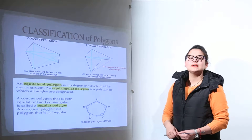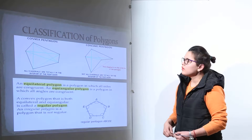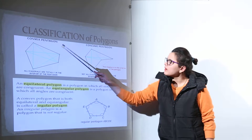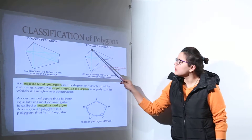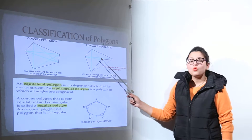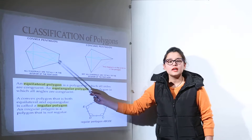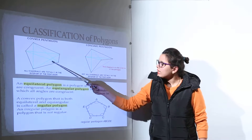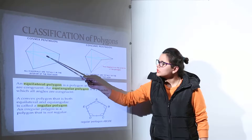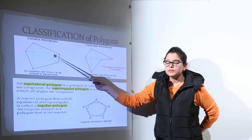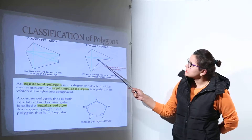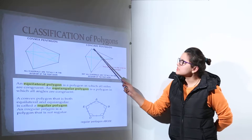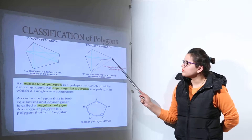Let us do the classification of polygons. As you can see over here, we have a convex pentagon and a concave pentagon. What is the difference between a concave and a convex pentagon? You can see the green lines in the figure are showing you the diagonals, as well as in this figure, you can see the diagonals shown with green line and red line. The black lines are showing you the shape of the figure.